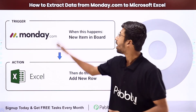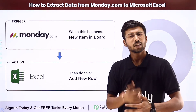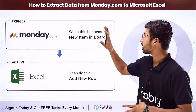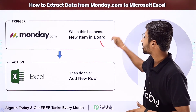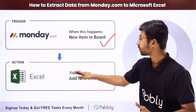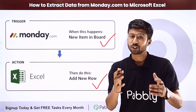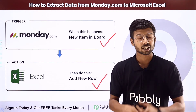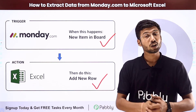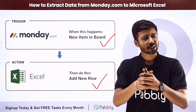In this video, we will learn how to extract data from Monday.com to Microsoft Excel. Suppose you are using Monday.com to manage your business. Whenever a new item is created in your Monday.com board, you want to add the details of that new item into Microsoft Excel as a new row. You can completely automate this process — the trigger will be creation of a new item in Monday.com, and the action will be addition of a row in Microsoft Excel.